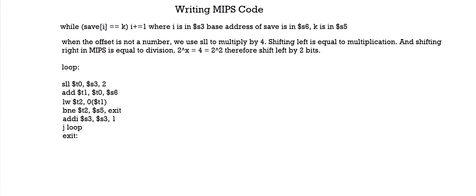Next, for save of i, we converted that into a memory address. First, we multiplied i by 4 by shifting it left two bits. Then we added it to the base register S6. We now have our memory address, but we need to load it into a register. Since we've already carried out the addition, we don't need another offset — so that's zero. We then compare save of i to k: if they're not equal, jump to exit; if they are equal, the branch is not taken, we execute i = i + 1, and jump back to loop.